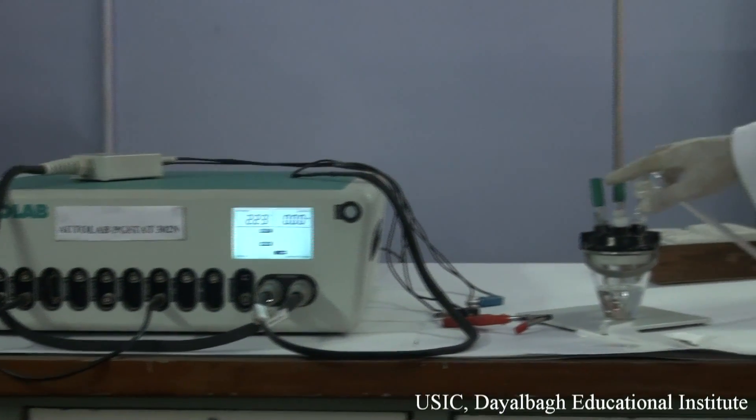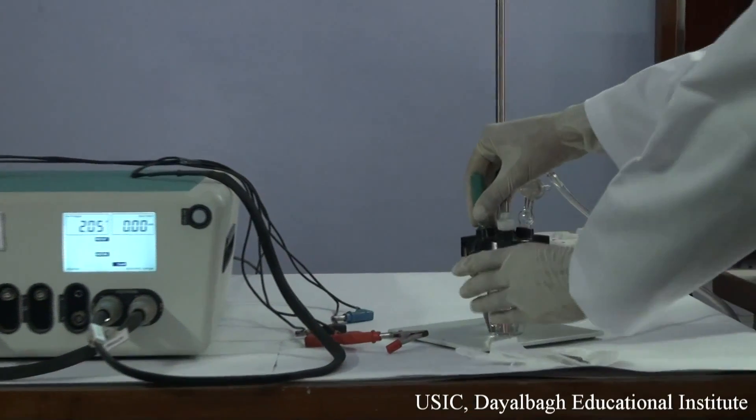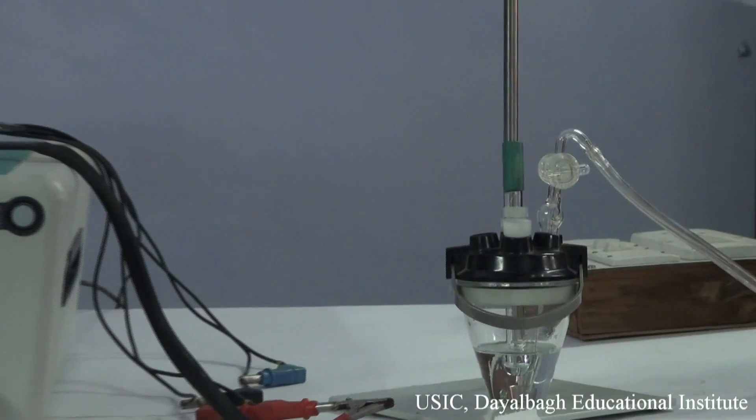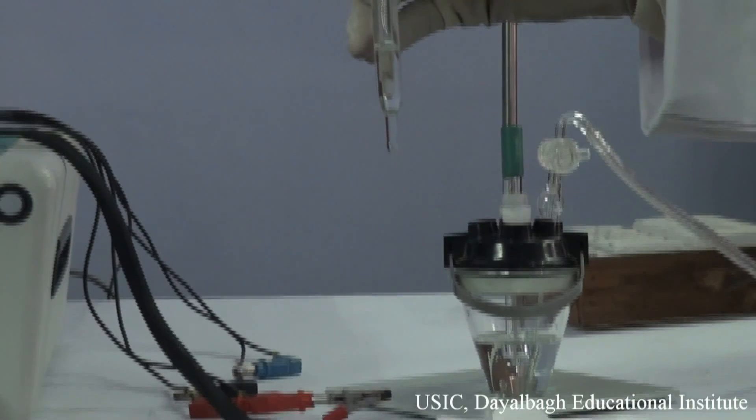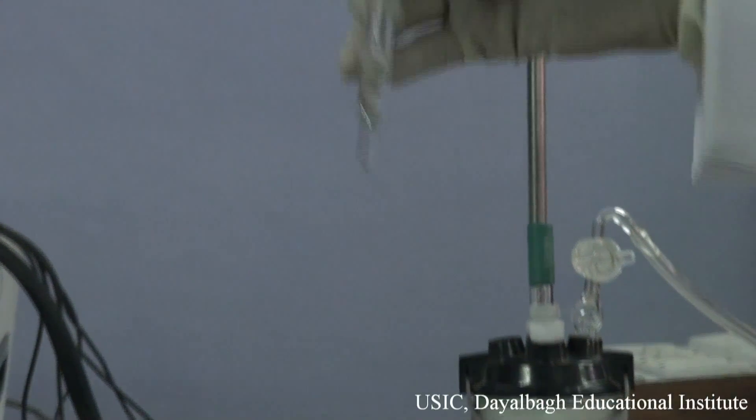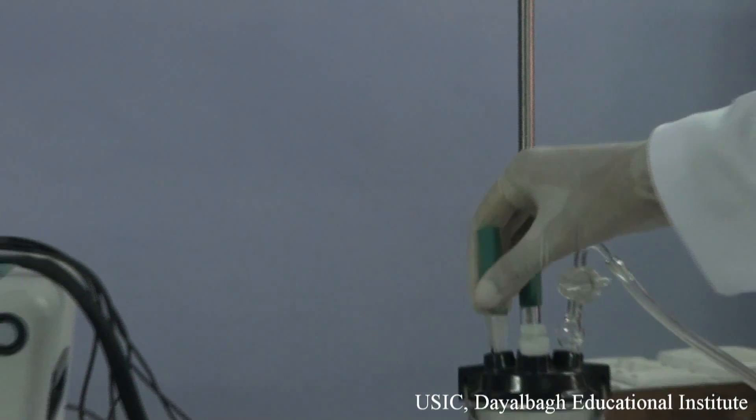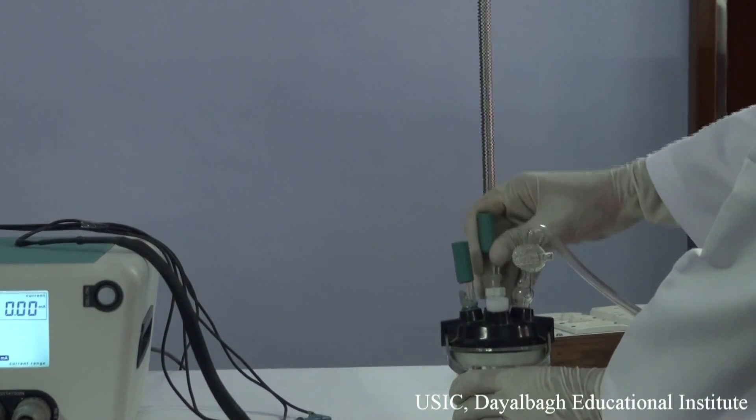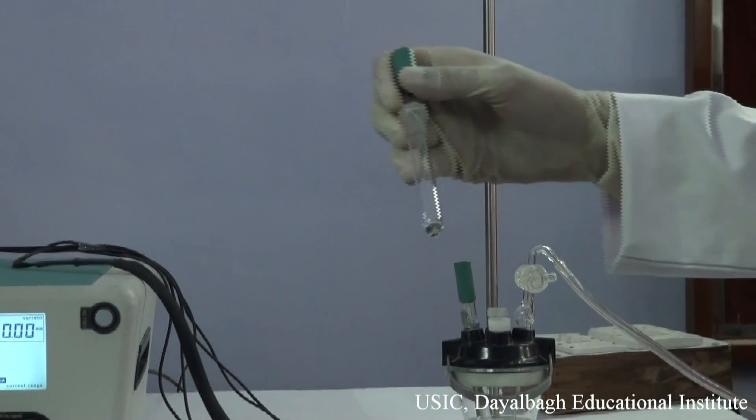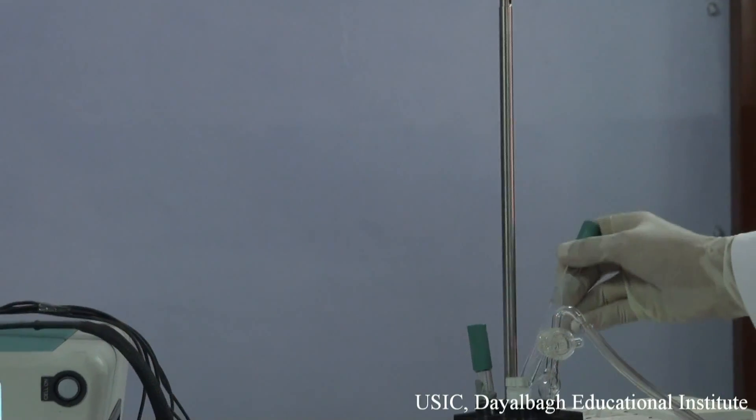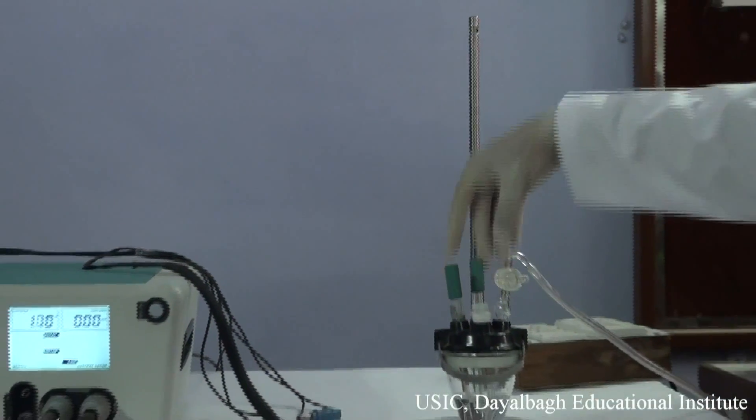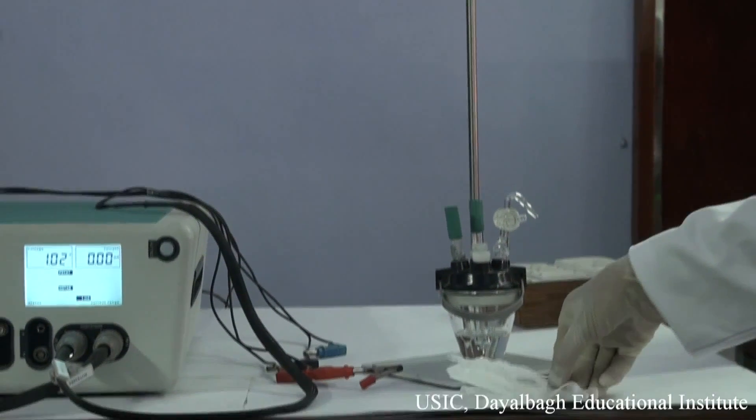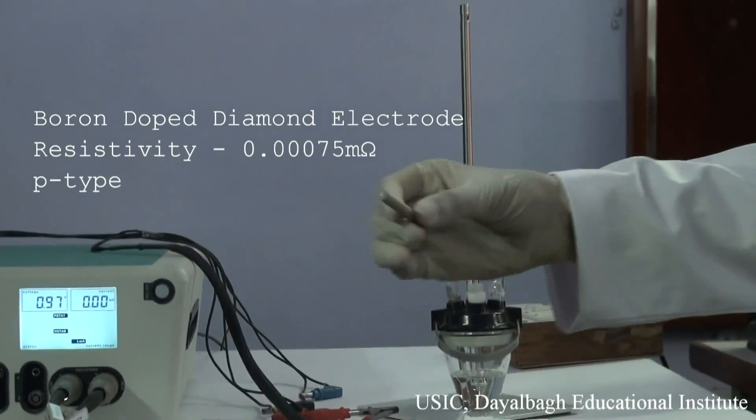Now, this is the three electrode system. This is the reference electrode, the silver-silver chloride electrode. This one is the counter electrode, the platinum wire. And the working electrode which we are using is boron-doped diamond electrode.